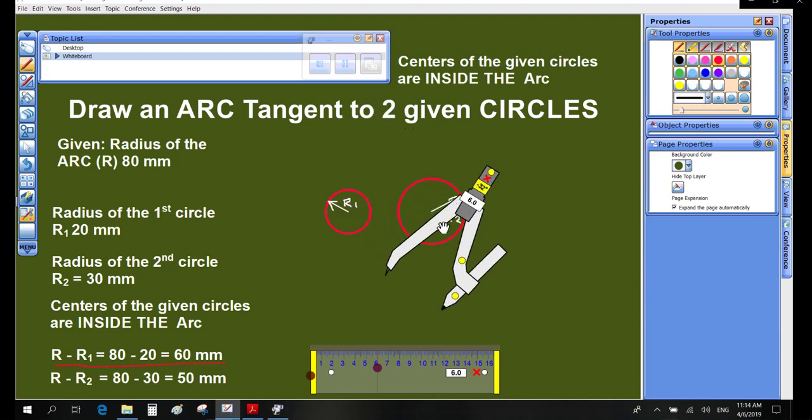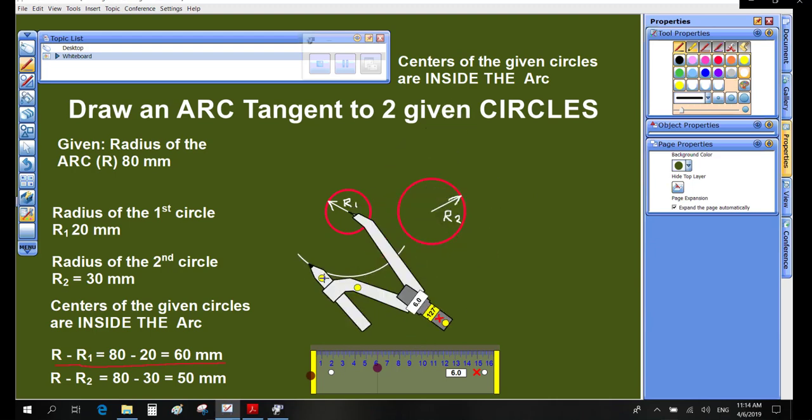With center of the circle of radius R1, draw an arc of radius R minus R1.